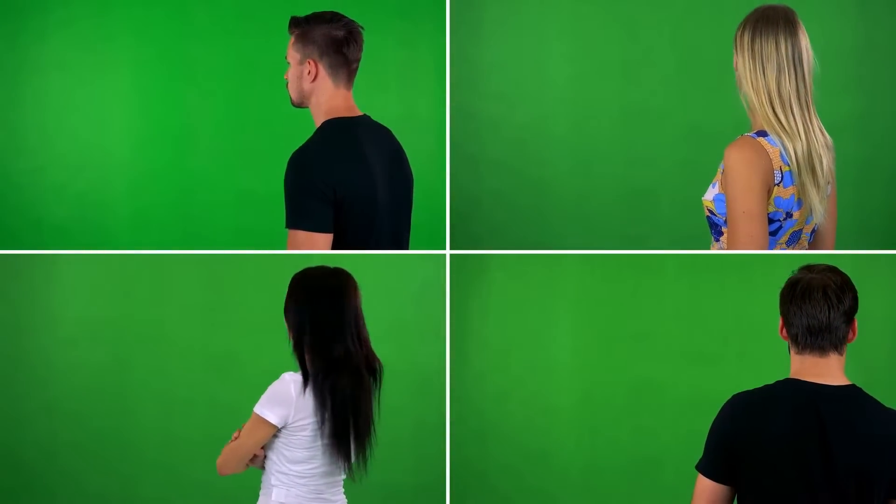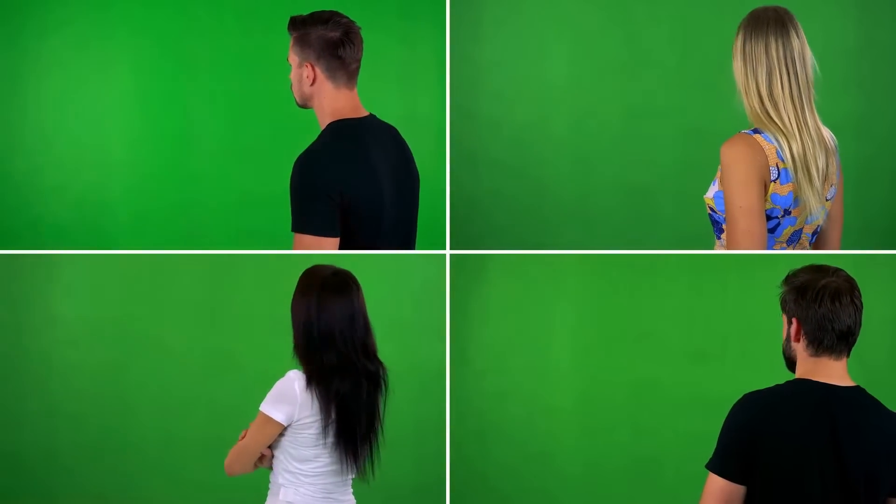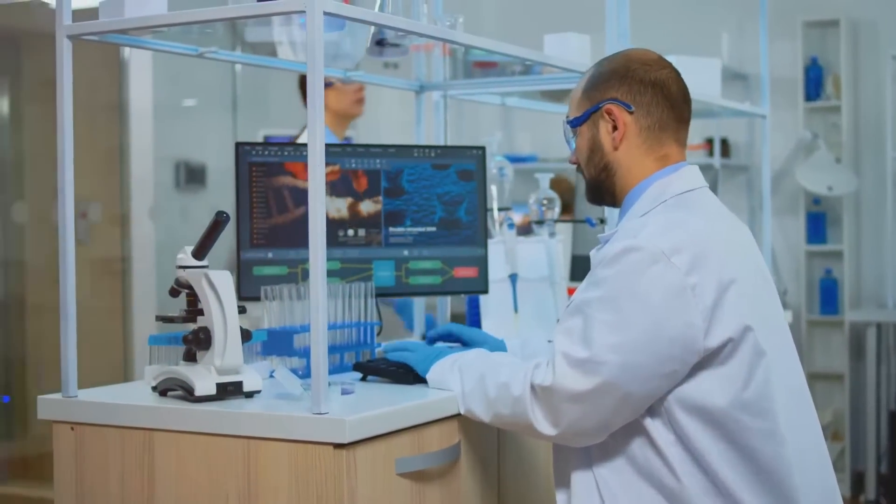They determine your traits, from your hair color to your height, and everything in between. But where are these instructions stored and how do they work?